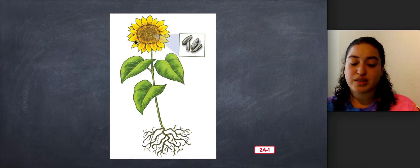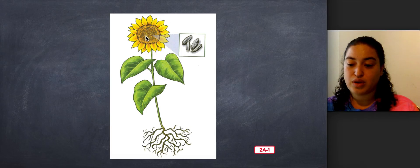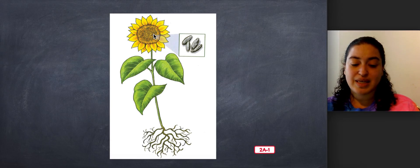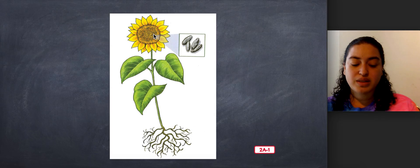Now look at the center part of the sunflower blossom. So look right here. The part that has many petals around it. This part of the plant is made up of many small seeds. One sunflower seed is only about the size of one of your fingernails. So here we can see the sunflower seeds.